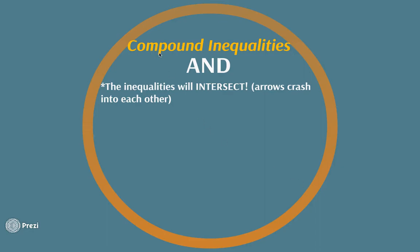The first type of inequalities we're going to talk about are compound inequalities, which means you're working with more than one inequality at a time. The first one we're going to talk about is the AND inequality. An AND inequality is when the inequalities will intersect.